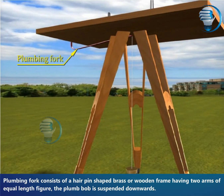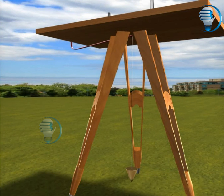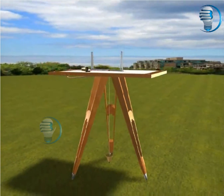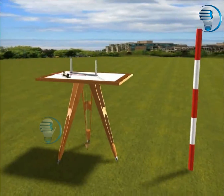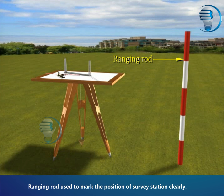Plumbing fork consists of a hairpin-shaped brass or wooden frame having two arms of equal length. The plumb bob is suspended downwards. Ranging rod is used to mark the position of a surface station clearly.